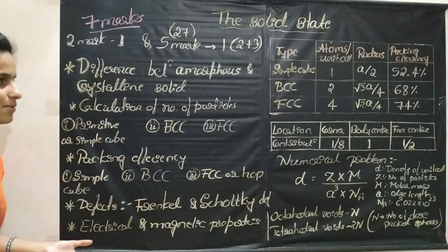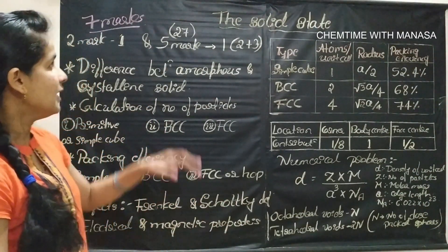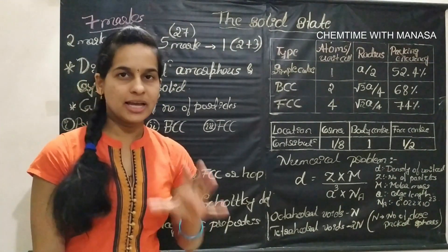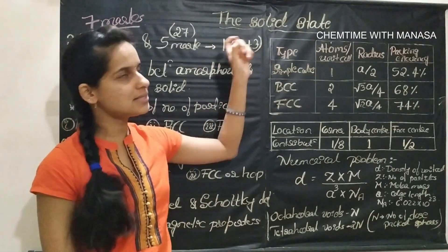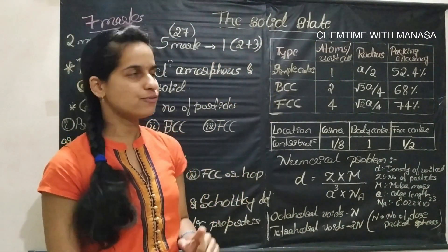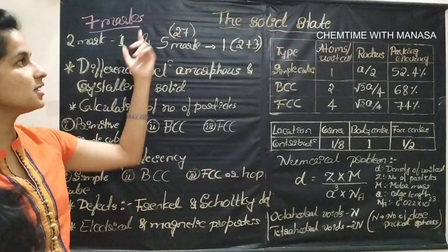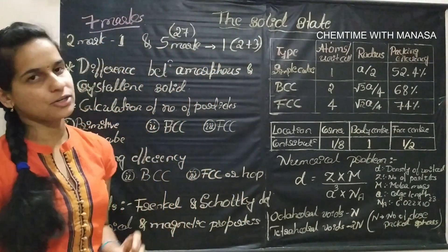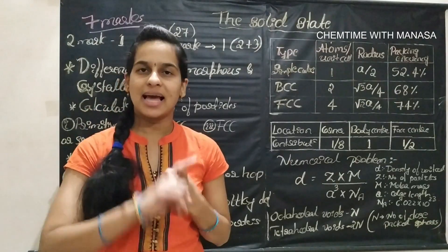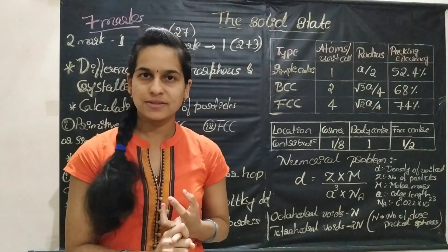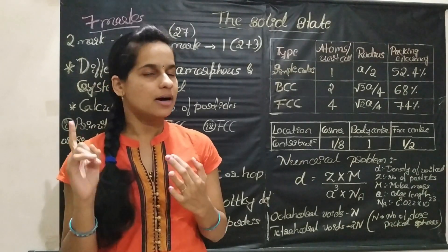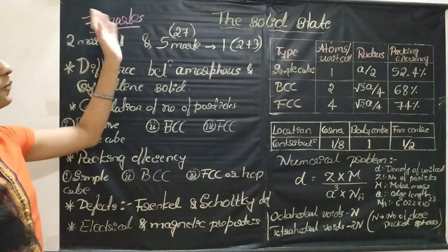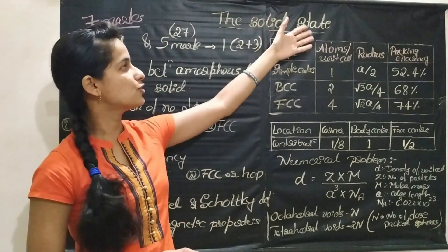All the other topics are helpful for all the students. One 2-mark question and one 5-mark question — the 5-mark question is generally divided as 2+3 or sometimes 4+1. Question 27 in the question paper is from the solid state chapter, and the 5-mark question will include one question from calculation of number of particles, packing efficiency, or a numerical based on density calculation. So 7 marks total from solid state.